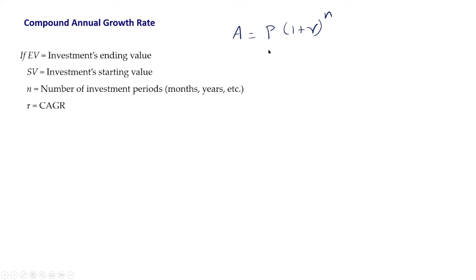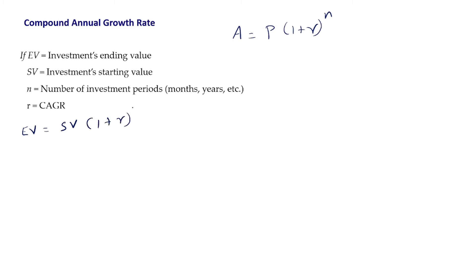If a person invests an amount — principal P — then this principal P grows to an amount A in N years if the rate of interest is R. So we have the formula A equals P into 1 plus R, the whole raised to N. This A is nothing but the investment's ending value, and P is nothing but the investment's starting value. So from this formula we can calculate R, which is nothing but the compound annual growth rate. Thus EV equals SV into 1 plus R, the whole raised to N.